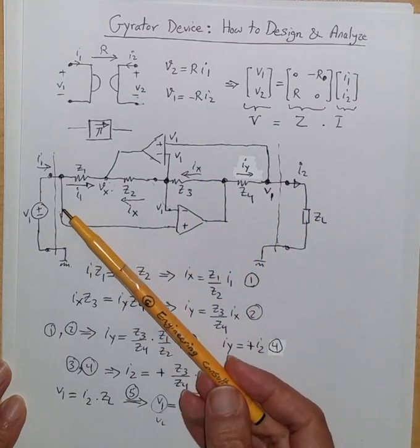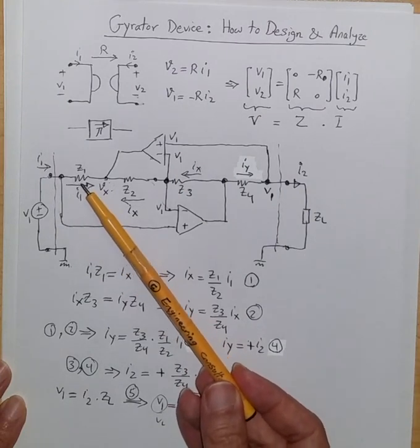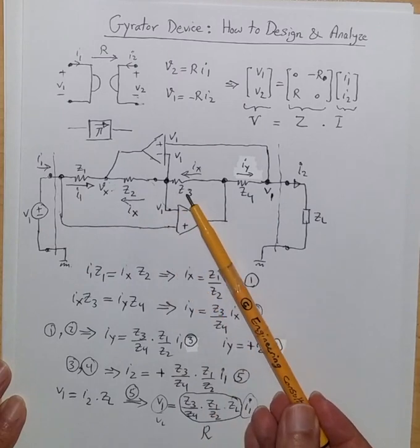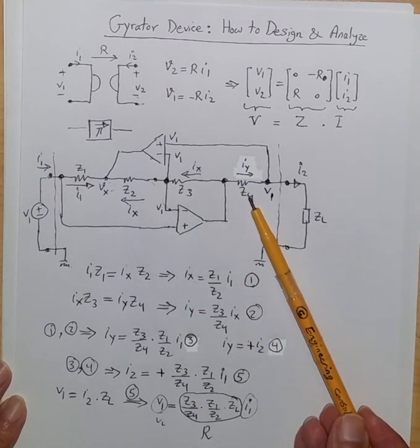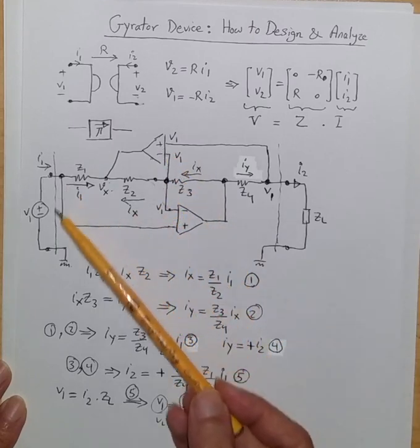Now assume that internally you have impedance Z1, impedance Z2, impedance Z3 and impedance Z4 and the way they are connected for these op-amps are like this as shown here.